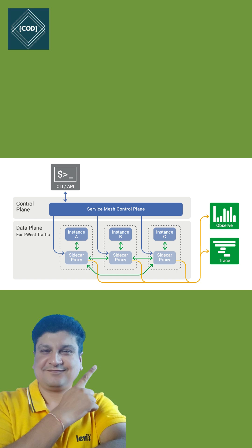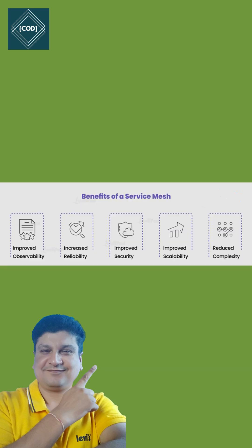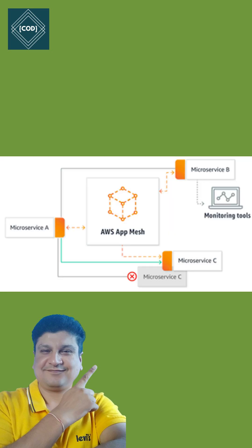It controls the delivery of service requests to other services, performs load balancing, encrypts the data, and discovers other services. Service mesh enables greater scalability in service-to-service communication. AWS App Mesh provides application-level networking so your services can communicate across multiple types of compute infrastructure.